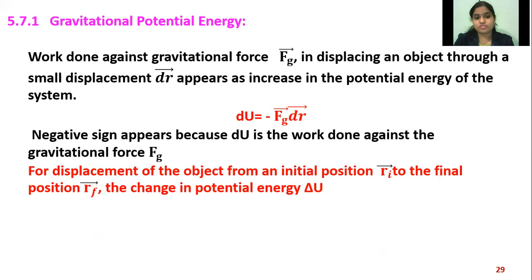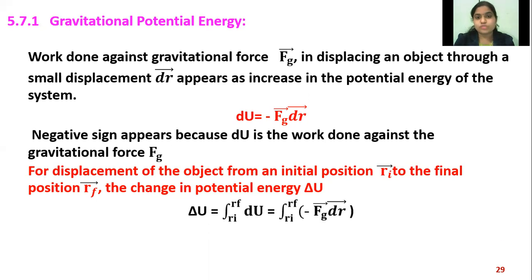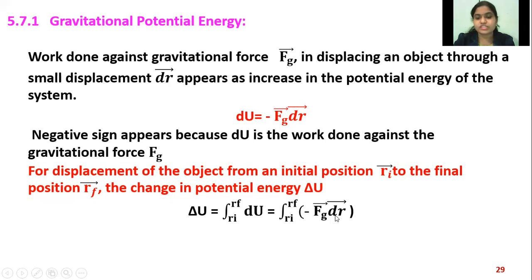For displacement of the object from initial position vector ri to final position vector rf, the change in potential energy delta u is given by the integration of du with lower limit ri and upper limit rf. Substituting du equals minus vector Fg dot vector dr, and solving, the two minus signs become positive.